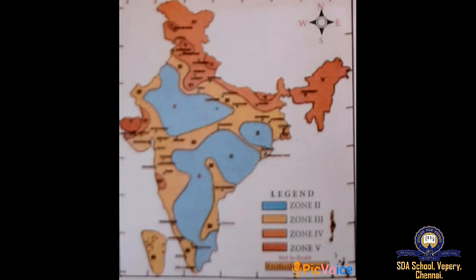Seismic Zone 5 — level of risk is very high. Regions comprise entire northeastern India, parts of Jammu & Kashmir, Himachal Pradesh, Uttarakhand, Rann of Kutch in Gujarat, part of North Bihar, and Andaman and Nicobar Islands. Zone 4 — high risk — covers remaining parts of Jammu & Kashmir and Himachal Pradesh, NCT of Delhi, Sikkim, northern parts of Uttar Pradesh, Bihar, West Bengal, parts of Gujarat, and small portions of Maharashtra near the west coast, and Rajasthan.